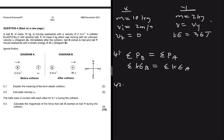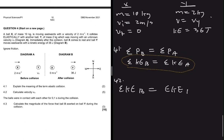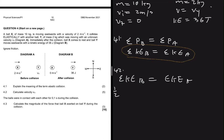Question 4.2 says calculate velocity VY. The formula we're going to use is kinetic energy before equals kinetic energy after. Usually, if you give a definition in 4.1 and then 4.2 says calculate, you calculate using that definition.